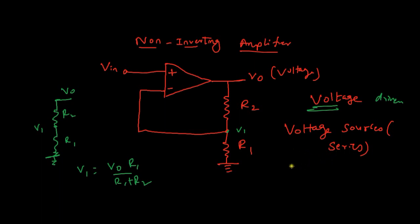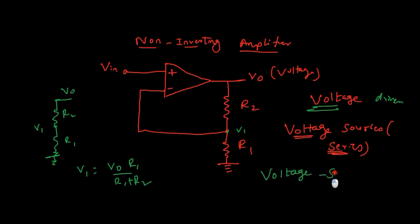Current sources means shunt. These are the two differences we need to understand while applying any feedback to any terminals. You apply voltage in series. So the voltage-driven feedback — we are extracting the voltage and applying it to the terminal as voltage.